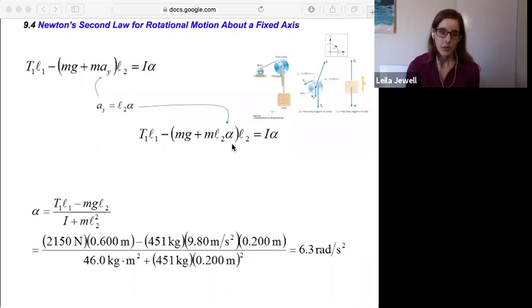And now we've eliminated one of our unknowns. Because we're ultimately trying to solve for this angular acceleration alpha and we don't know what a sub y is. So if we can write them both in terms of alpha that's great.